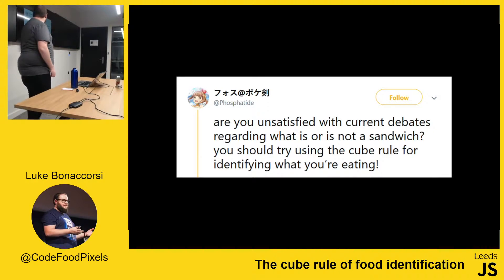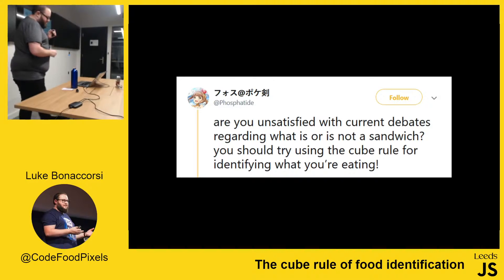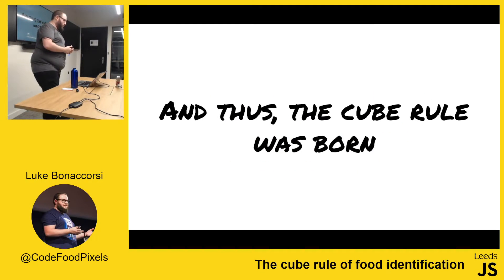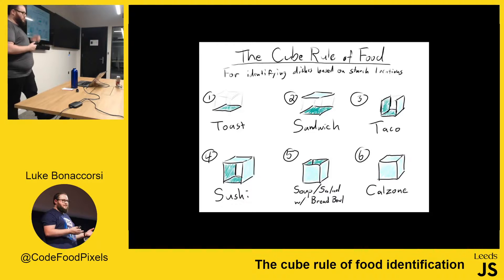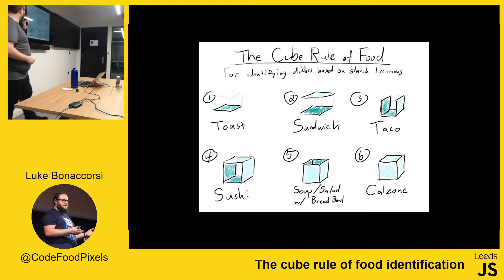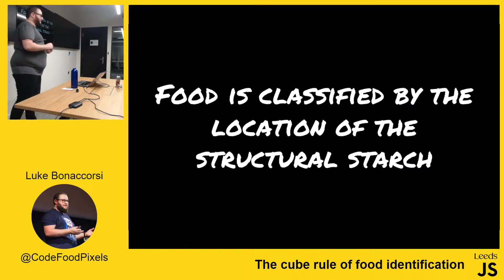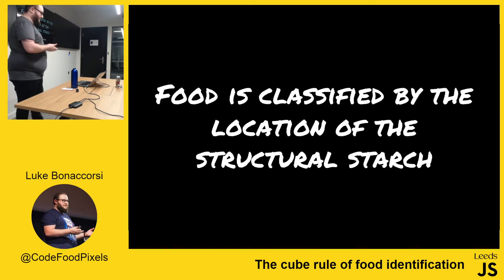But the oracle, phosphatides, actually solved this for us. The cube rule was born. So according to the cube rule, there are six groups, and food is classified by the location of its structural starch — structural starch being a solid piece that holds it together.